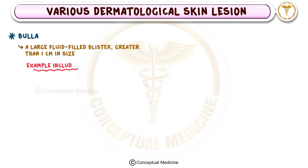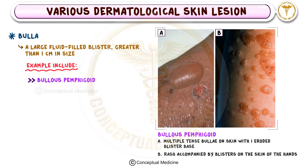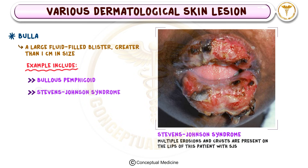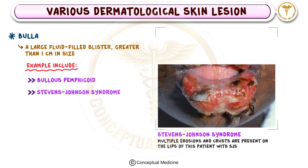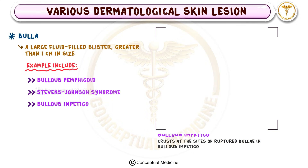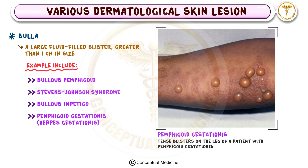Bullae can be seen in conditions like bullous pemphigoid, a blistering autoimmune disease. They also appear in severe conditions such as Stevens-Johnson syndrome, bullous impetigo, and pemphigoid gestationis, also known as herpes gestationis, which occurs during pregnancy.